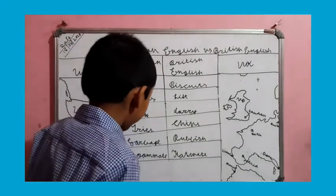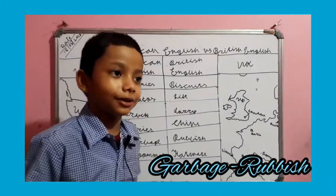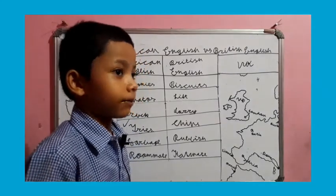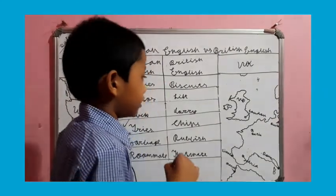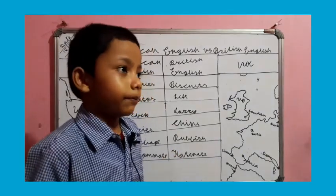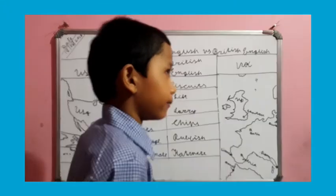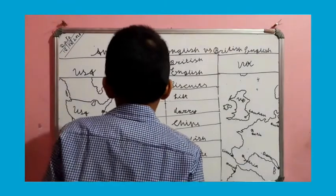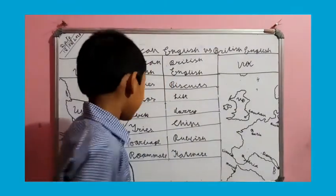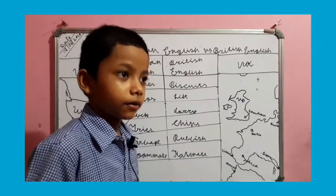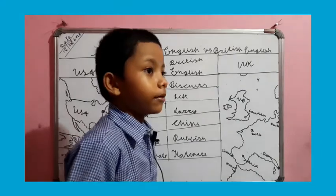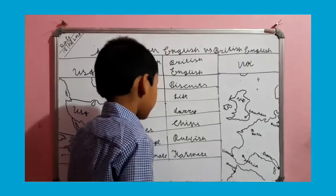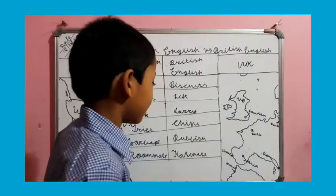Number five: garbage. Garbage is dirty waste that can be stored in the dustbin, and the garbage truck picks it up and takes it to the garbage factory. American people say garbage, while British people say rubbish.